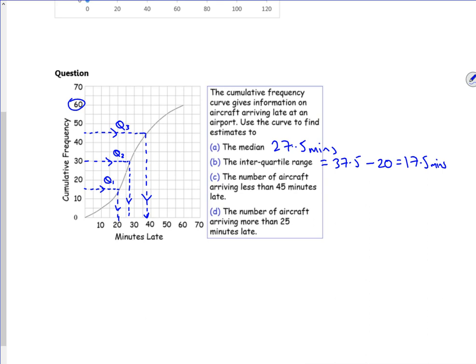So it says a number of aircraft that are less than 45 minutes late. So we'll go up this time. What do we reckon? 51, 52, something like that. The complete pack says 52, so we'll go with that. 52 aircraft.